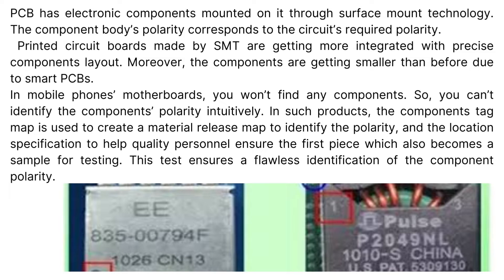In such products, the component's tag map is used to create a material release map to identify the polarity, and the location specification helps quality personnel ensure the first piece, which also becomes a sample for testing. This test ensures a flawless identification of component polarity.